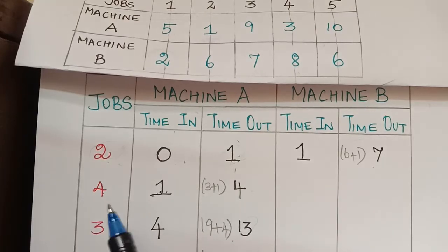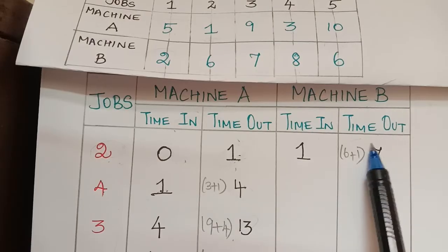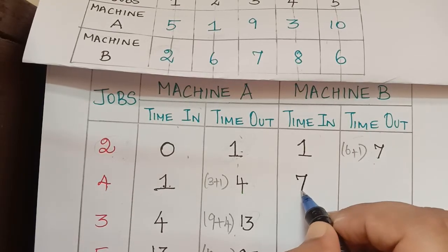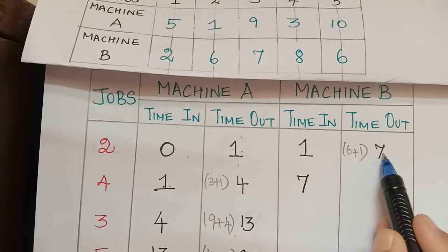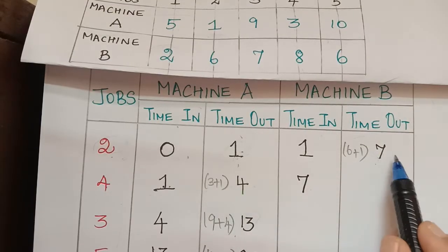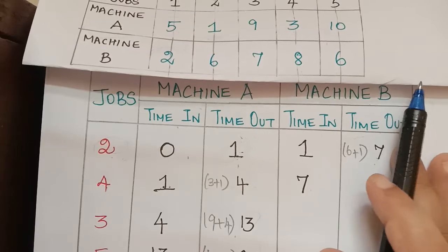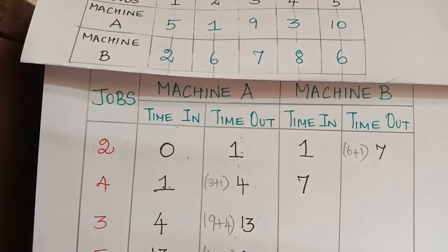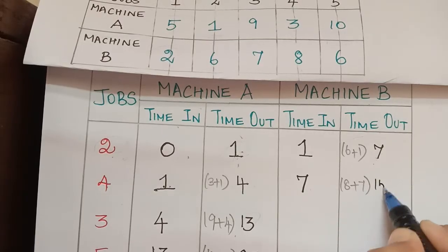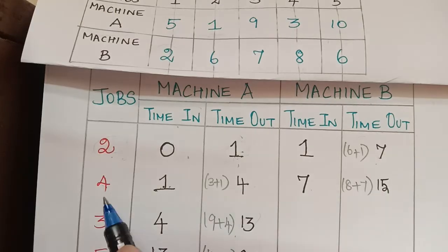We check: the time out for machine A for job 4 is 4, and the time out for machine B for job 2 is 7. The largest of these two is 7, so 7 is the time in for job 4 in machine B. Job 4 performs for 8 hours in machine B, so 8 plus 7 equals 15 — time out is 15.